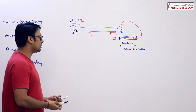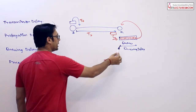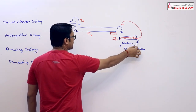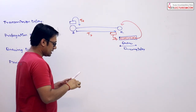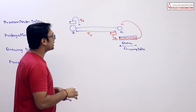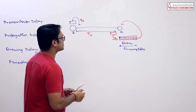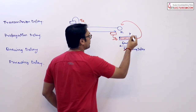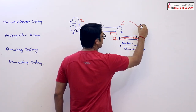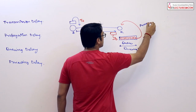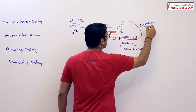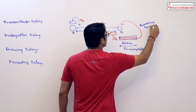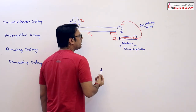After waiting in the queue, the receiver takes the data packet and processes it. The time taken to process the data packet is called processing delay.